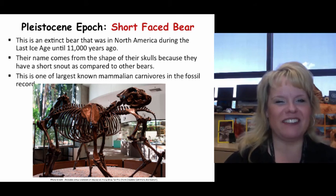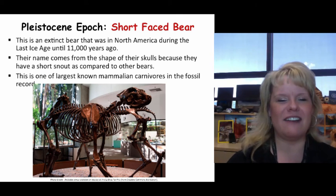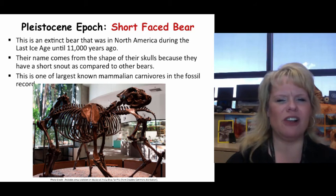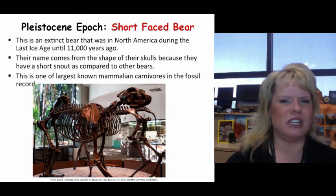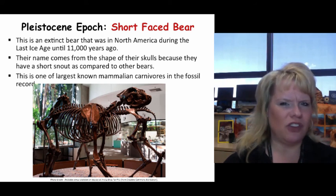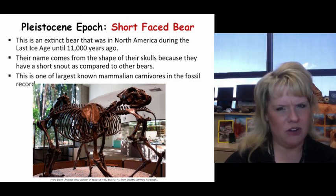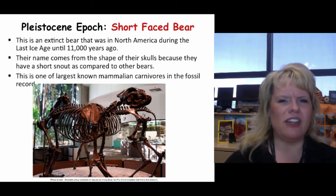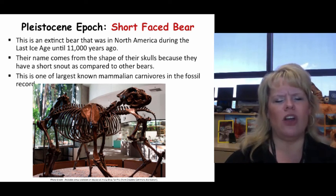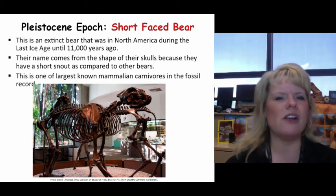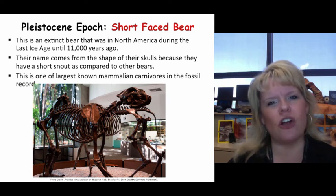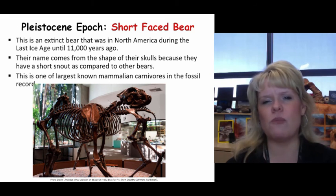The short-faced bear got outcompeted after the last Ice Age, with grizzly and black bears taking their place. Their name comes from their very short snout relative to the size of their face. They are one of the largest known mammalian carnivores in the fossil record, living in North America and ranging as far south as the Ozark Mountains — a very important predator of their time.